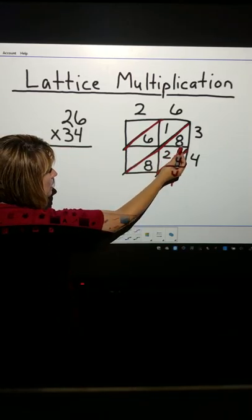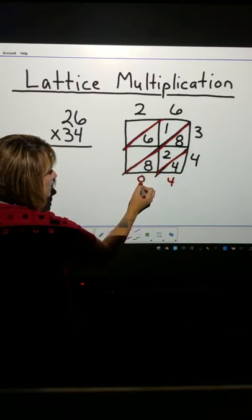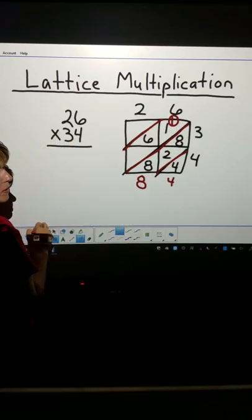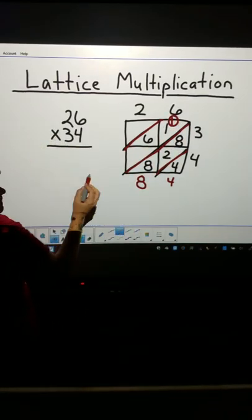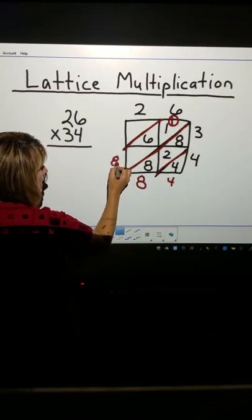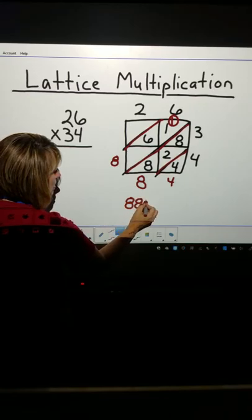8, 2, and 8. 8 plus 2 is 10. 10 plus 8 is 18. Put the 8 here, but have to regroup, and circle it so you remember to add it in. Now, 1 plus 1 is 2. 2 plus 6 is 8. We find the product, 884.